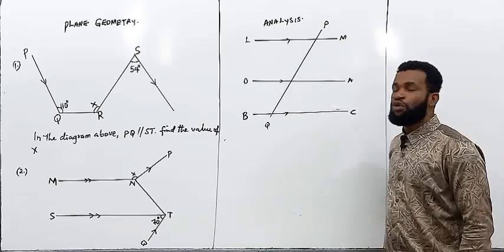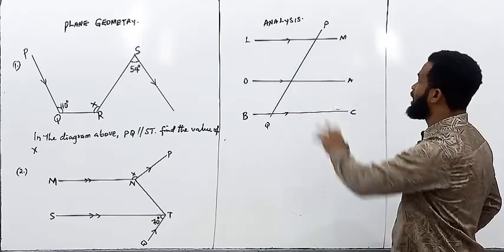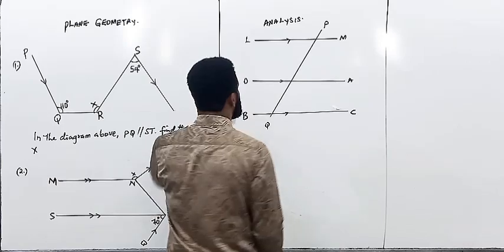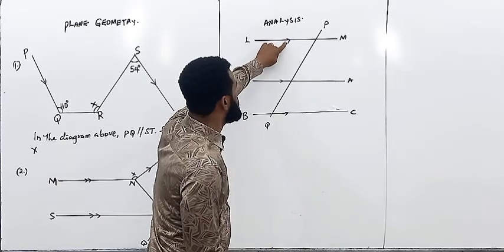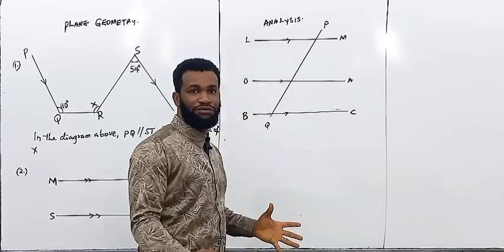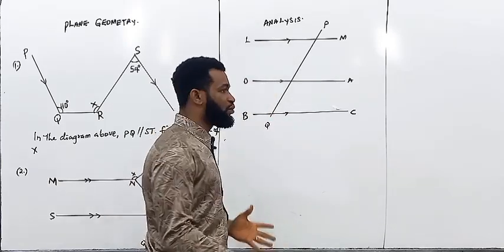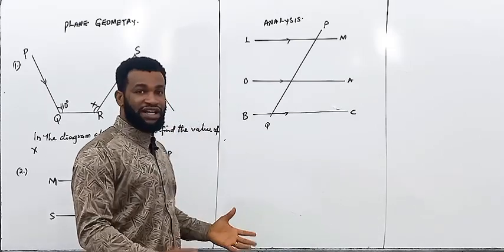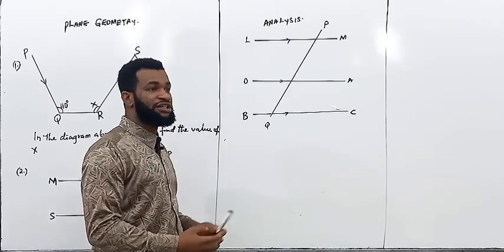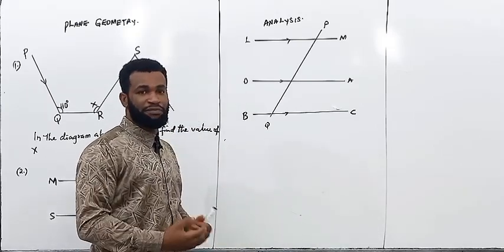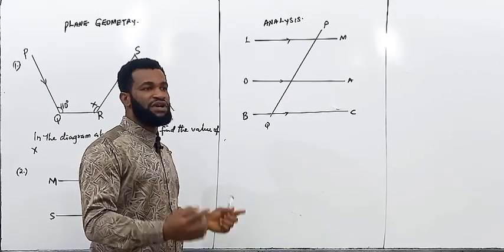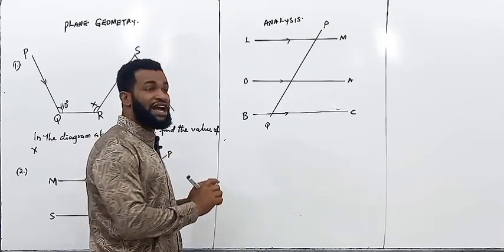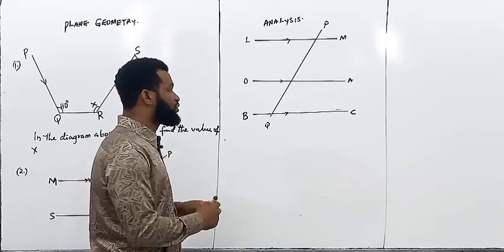What you are seeing here is simply parallel lines. Each time you see this symbol, you know it is a parallel line. When we talk about parallel lines, we mean that two or more lines can be parallel when they don't meet, no matter what.